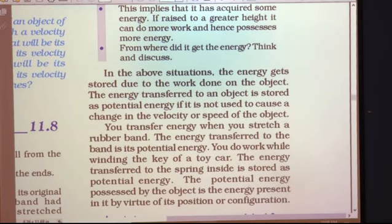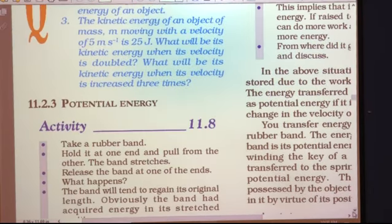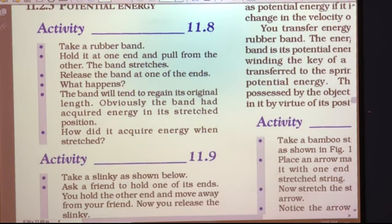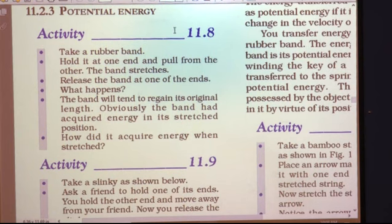After solving the numericals, let us see the second type of mechanical energy, that is potential energy. We have discussed kinetic energy as the energy possessed by an object on account of its motion, with expression Ek = ½mv². Now let us move to the next type of energy, that is potential energy.